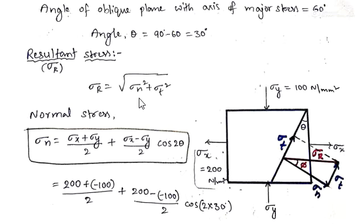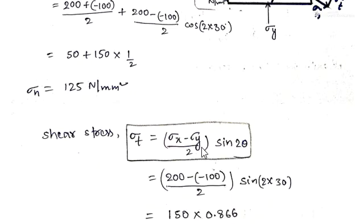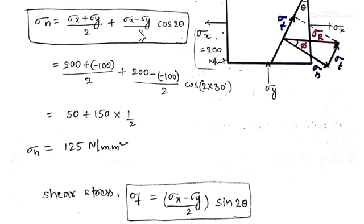The resultant stress is given by the formula: root of (σn² + σt²). First we need to find σn. The formula for normal stress on the oblique plane is: σn = (σx + σy)/2 + (σx − σy)/2 · cos 2θ. The formula for shear stress on the oblique plane is: σt = (σx − σy)/2 · sin 2θ. For derivation of these formulas, please refer to the previous video on principal stresses and strains, Case 2.